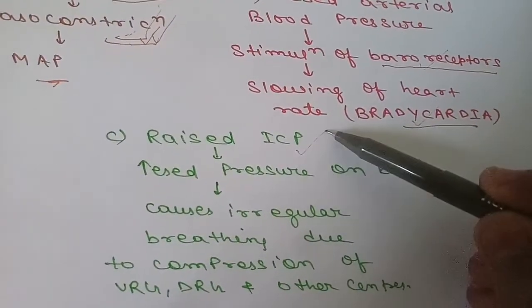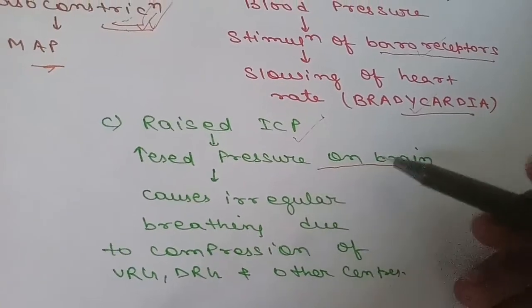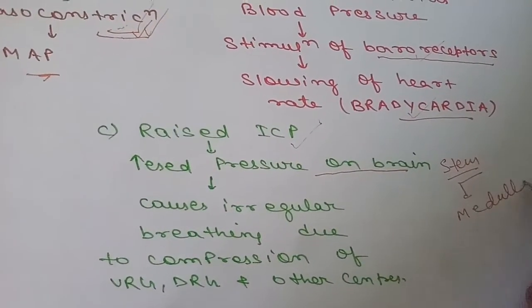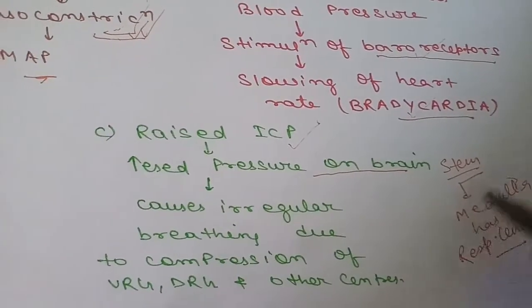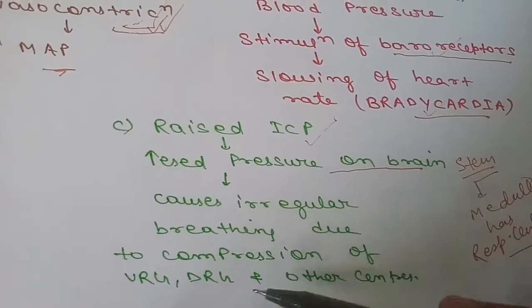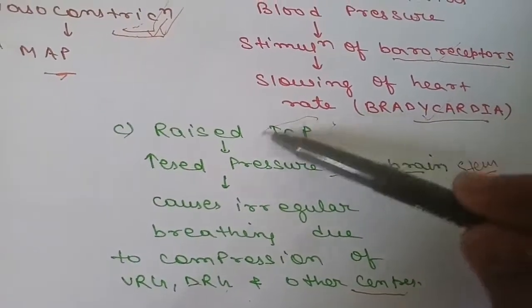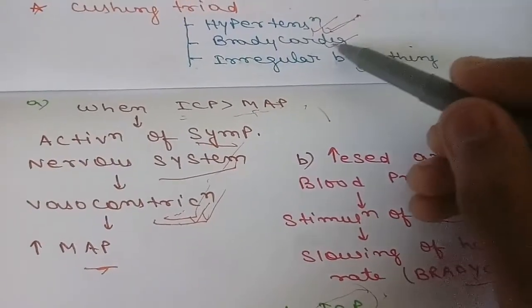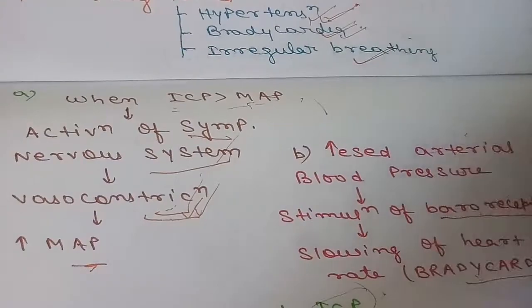The third component is irregular breathing. Raised intracranial pressure puts pressure on all brain cells including the brainstem, and within the brainstem the medulla contains respiratory centers — the ventral respiratory group (VRG), dorsal respiratory group (DRG), and the pre-Bötzinger complex. Compression of these centers causes irregular breathing. To summarize, the Cushing triad consists of: hypertension from vasoconstriction, bradycardia from baroreceptor stimulation, and irregular breathing from brainstem compression.